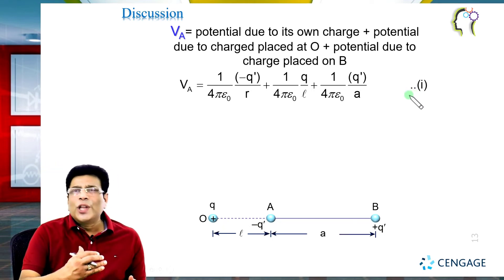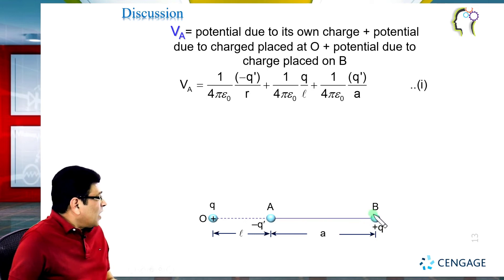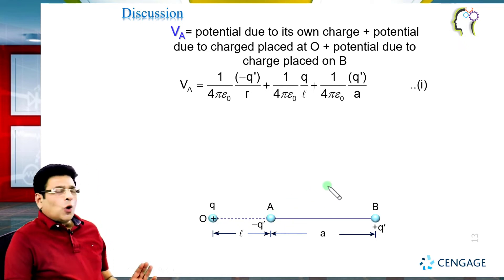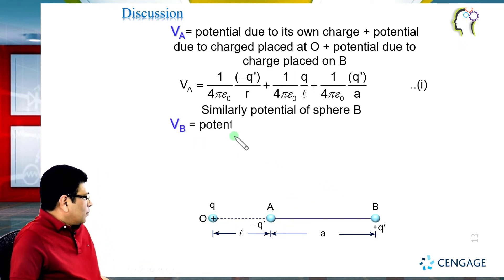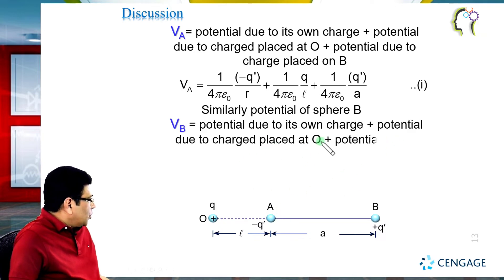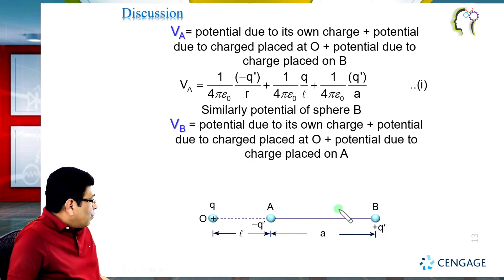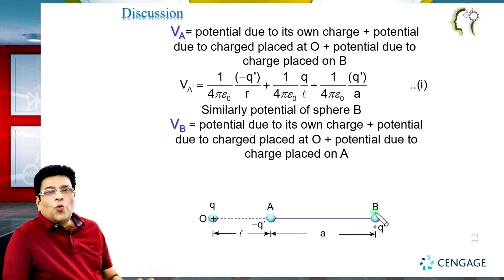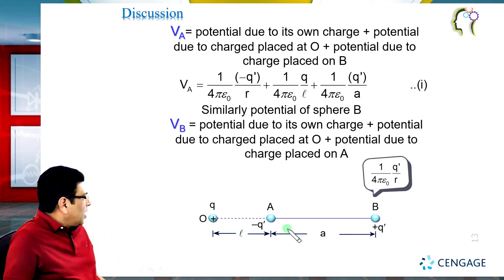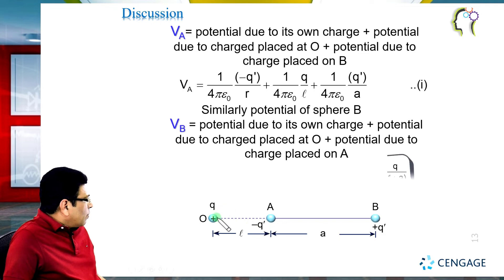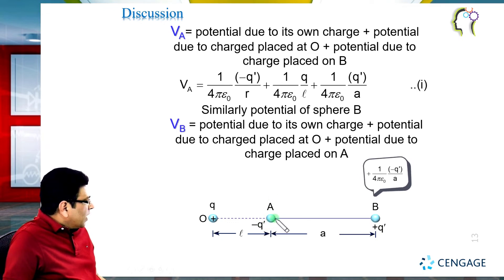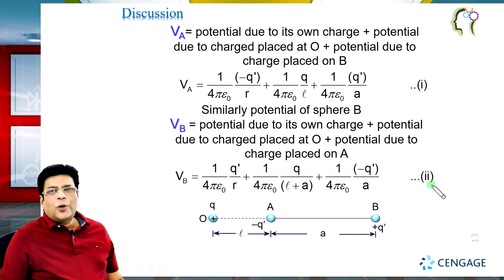Similarly, we can find the potential of sphere B. Vb equals: potential due to its own charge (1/4πε₀ × q′/r), plus potential due to point charge q at separation (l + a) which equals 1/4πε₀ × q/(l + a), plus potential due to charge minus q dash on sphere A at distance small a (1/4πε₀ × (−q′/a)). This is equation number 2.